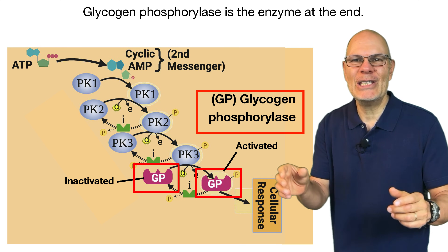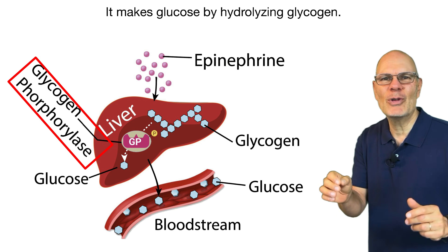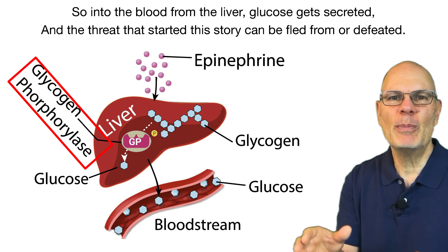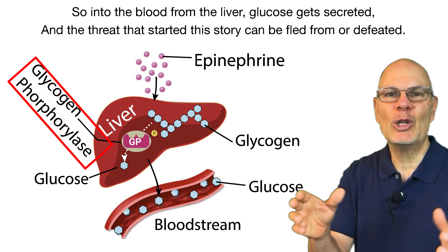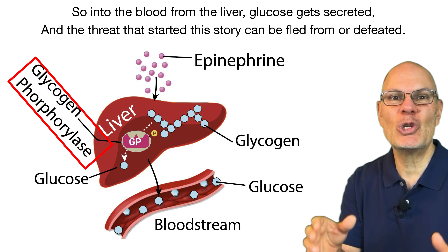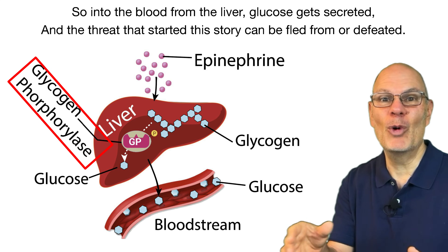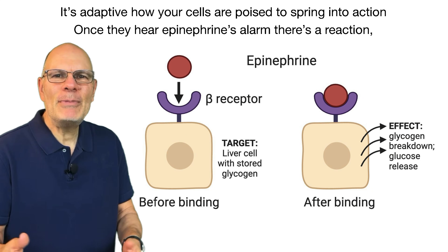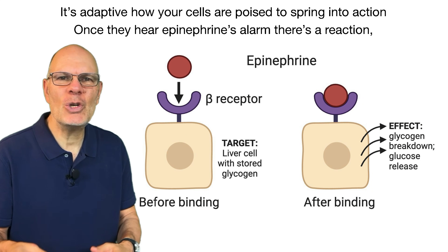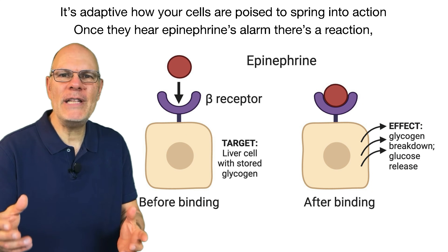Glycogen phosphorylase is the enzyme at the end that makes glucose by hydrolyzing glycogen. So into the blood, from the liver, glucose gets secreted, and the threat that started the story can be fled from undefeated. It's adaptive how your cells spring into action.